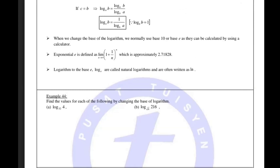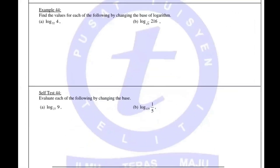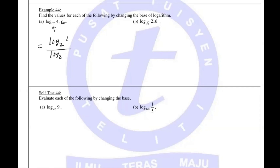Let's look at Example 44: find the value of each of the following by changing the base. You can choose any base you like, but most of the time you look at the numbers. Here we have 32 and 4 — both are numbers in base 2. So I use base 2. 4 stays on top, 32 stays below. 4 is 2 to the power 2, and 32 is 2 to the power 5. When you cancel both, you get 2 over 5.